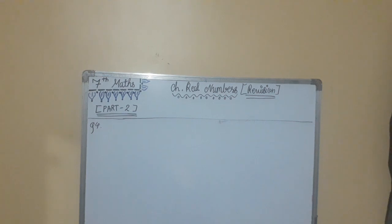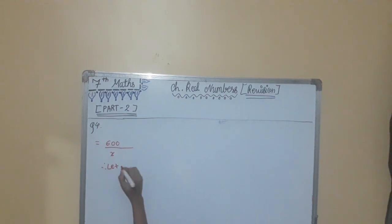The question is saying that 600 must be divided by the smallest number x. Let x be the smallest number. 600 must be divided by the smallest number so that it is equal to perfect square. I will write perfect square as PS. So in this question we will find the smallest number x by prime factorization.